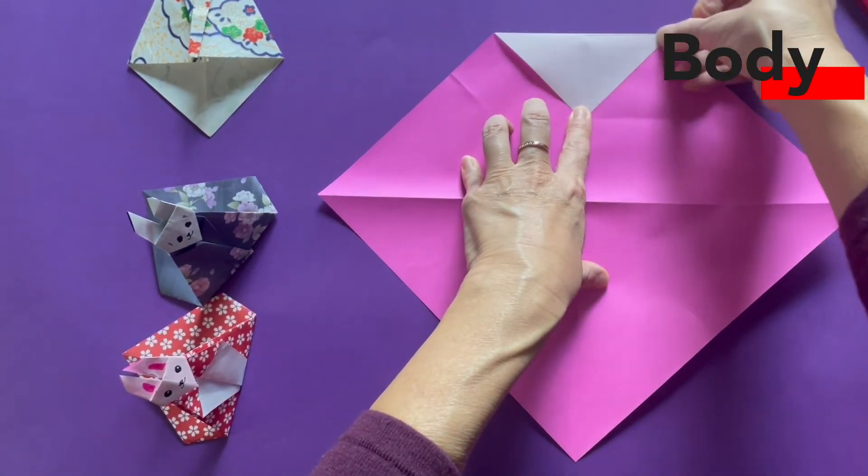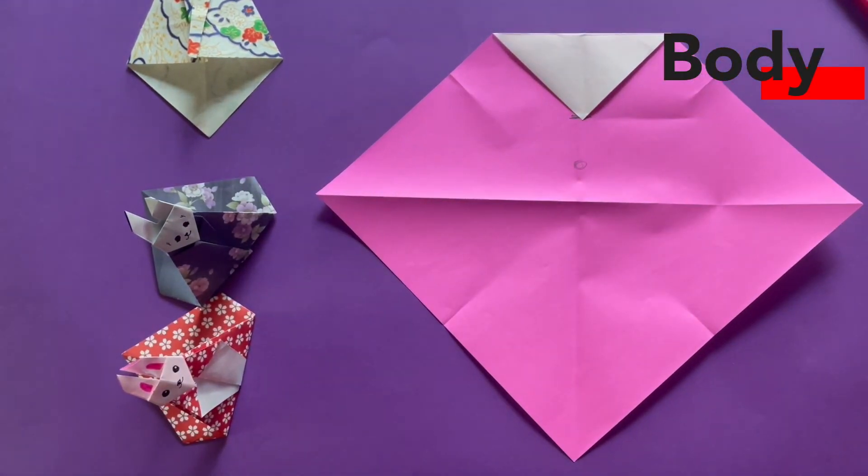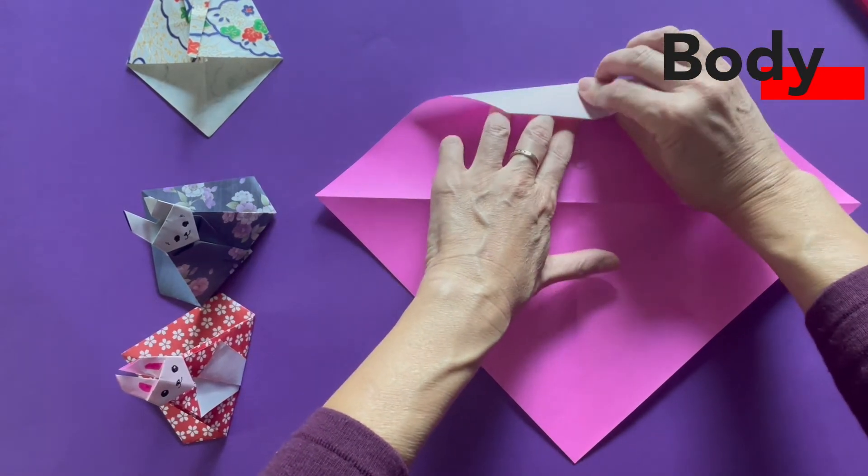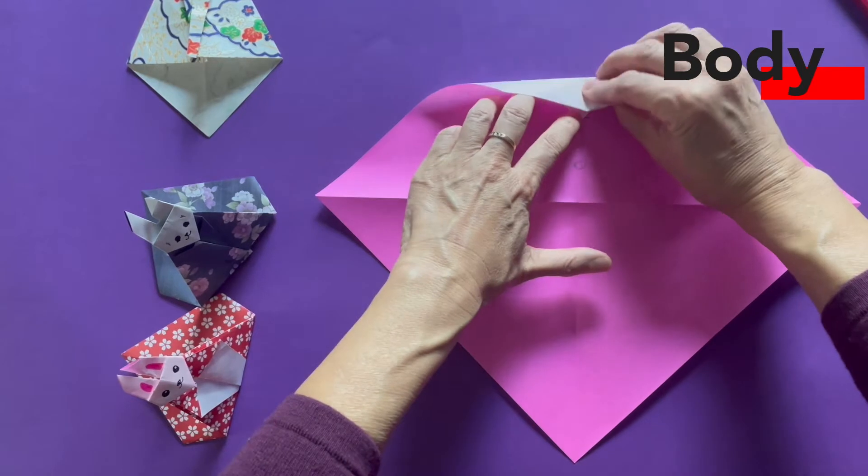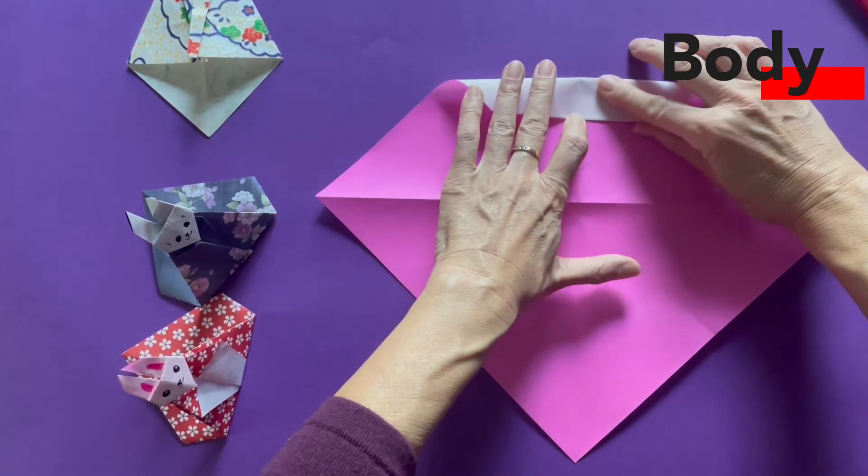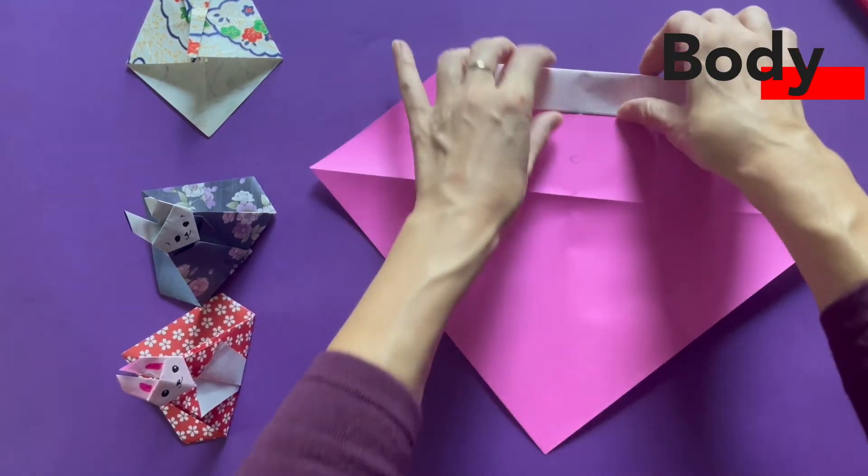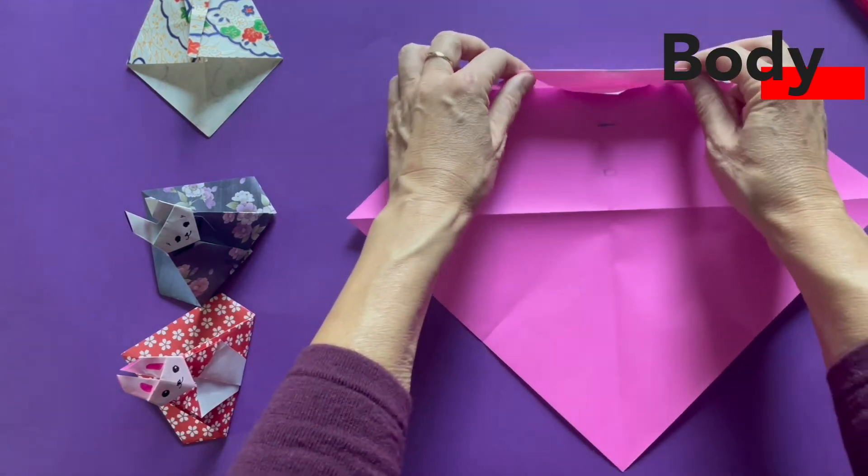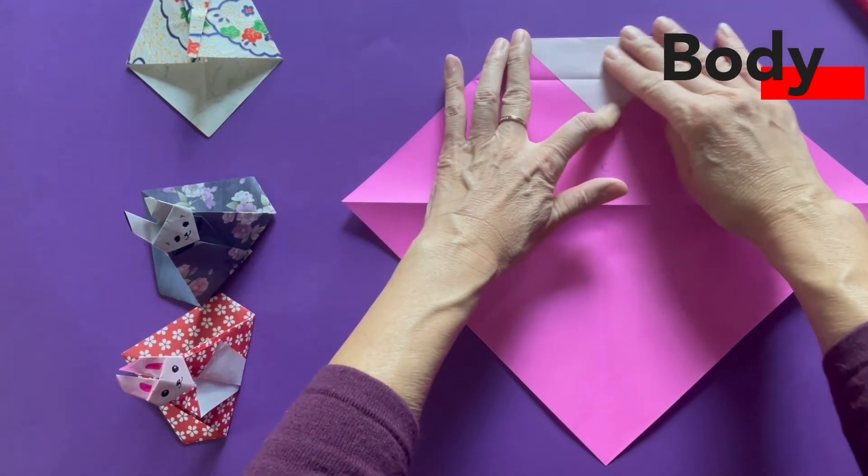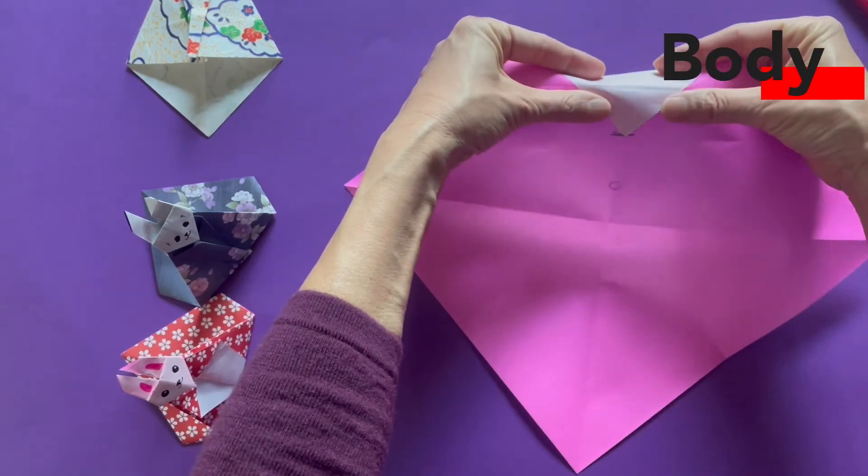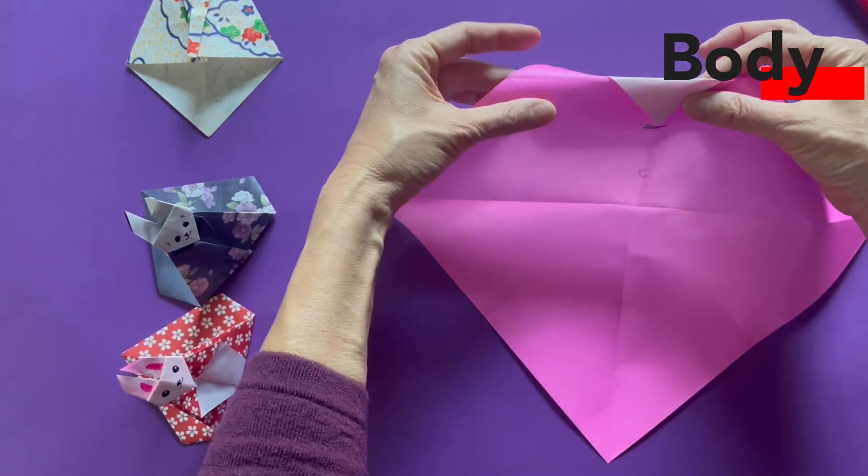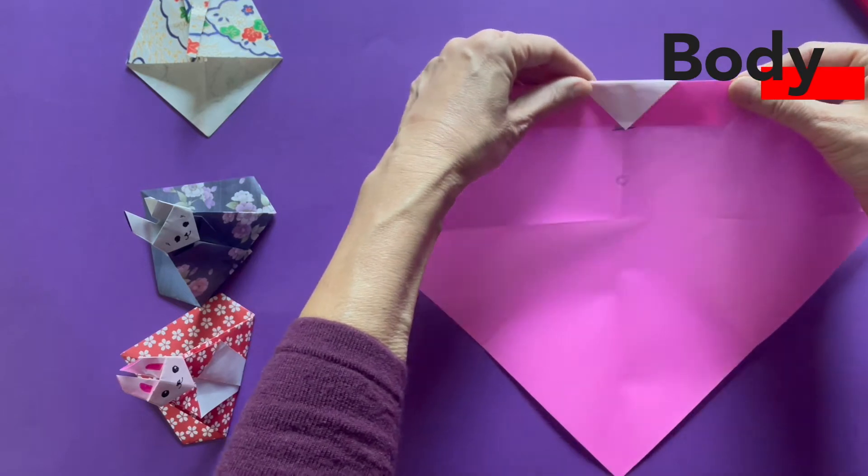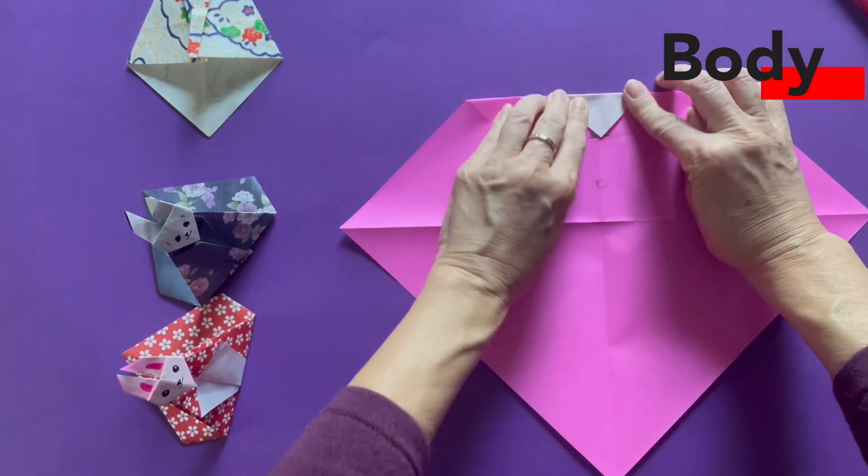Next, you are folding the top folded edge to the bottom of the white triangle you just created. Make a good creasing line because you are going to unfold and look at the creasing line. That crease will be reversed. What do I mean by that? From the dented crease, you are going to turn this into like a mountain. And as a result, it looks like that.